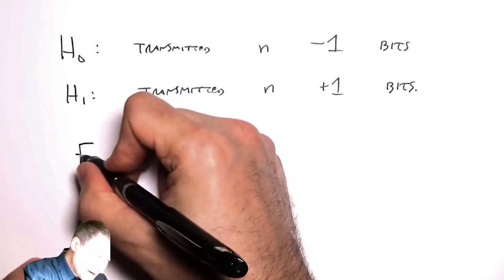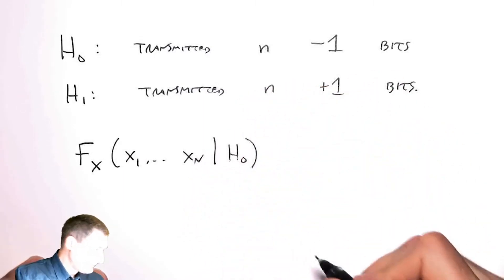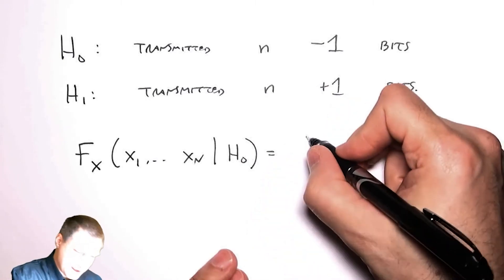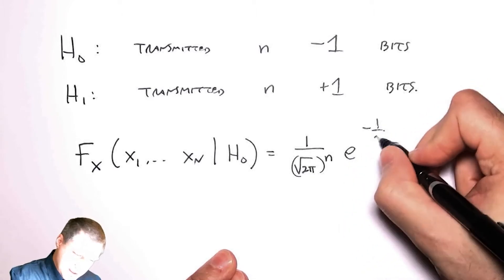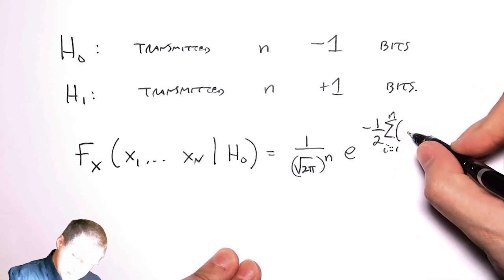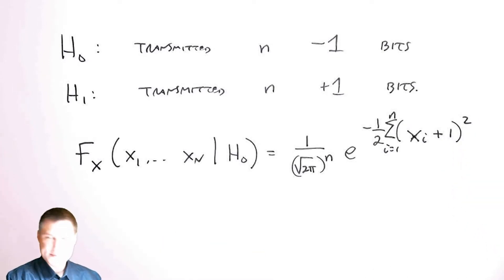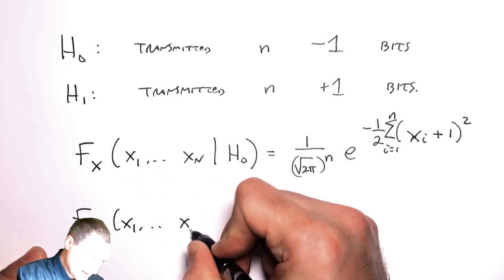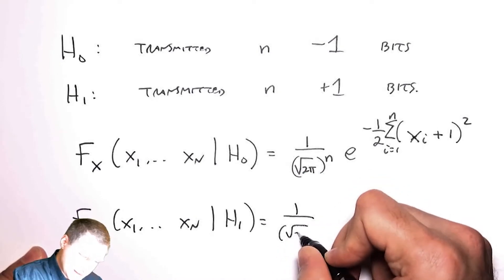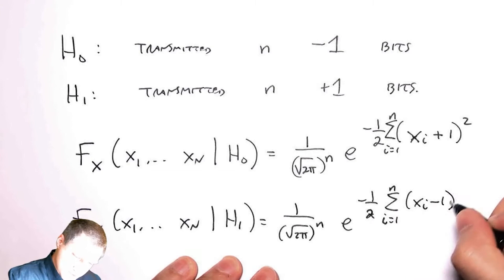I need to characterize the hypotheses in each case. The PDF of these n numbers under the null hypothesis is evaluated assuming I'm in the minus-one case. I have n independent bits, and the mean is minus one, so it's like (x_i + 1) squared — this is just the product of a bunch of those PDFs, since the noise is independent every time. In the H1 case, the mean is plus one, giving a different PDF.